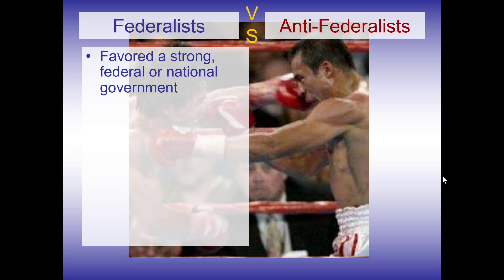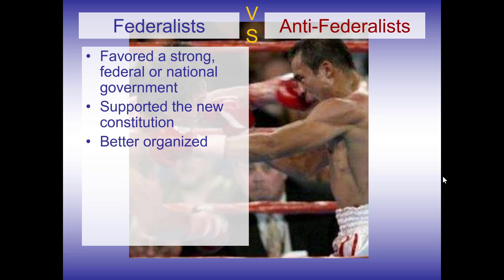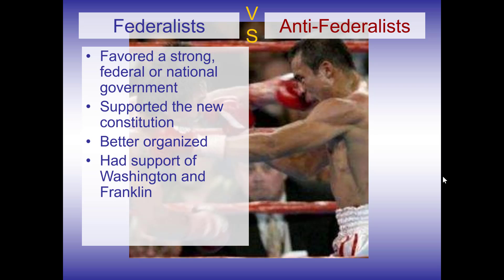Federalists favored a strong Federal or National government. They thought we needed a government for the whole country, not just to have things be run by the states. They supported the new Constitution and were the ones who wanted it ratified by all the states. They were a better organized group than the Anti-Federalists, with printing presses and pamphlets to distribute information about the Constitution and gain support for it. They also had key supporters like George Washington and Ben Franklin, who wanted the states to adopt this new Constitution giving us a stronger national government.